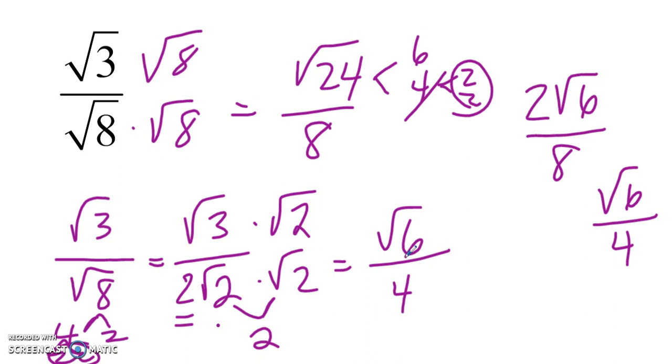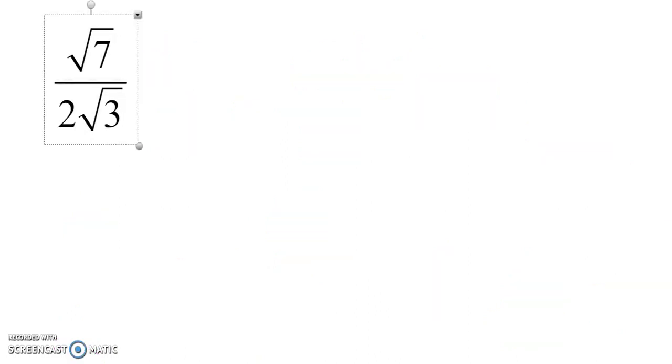Anytime you can simplify a radical over radical, for example, if you had the square root of 24 over the square root of 6, if you can simplify that, the 24 over 6 simplifies. You can make that the square root of 4, 24 divided by 6, which is 2. You don't have to start multiplying by the square root of 6. Just try to observe your problem first.